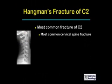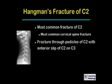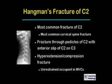Hangman's fractures of C2 are the most common fracture of C2 and also the most common fracture of the cervical spine. They are fractures through the pedicles of C2 with almost always an anterior slip of C2 on the body of C3. They usually occur as a combination of hyperextension and compression, as would occur with unrestrained occupants in motor vehicle collisions.